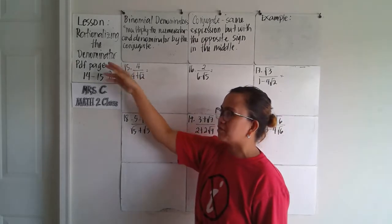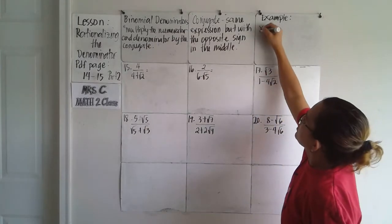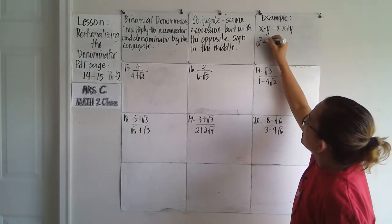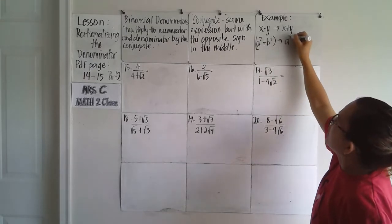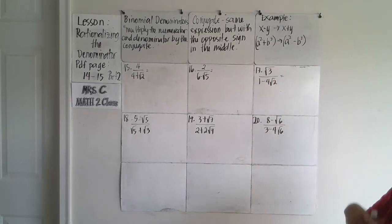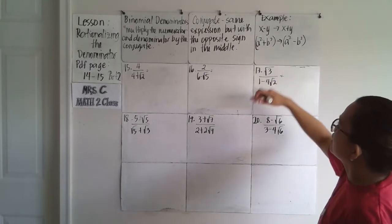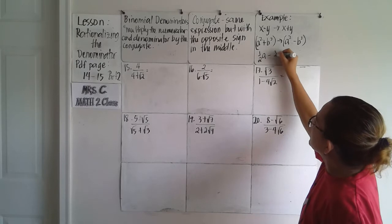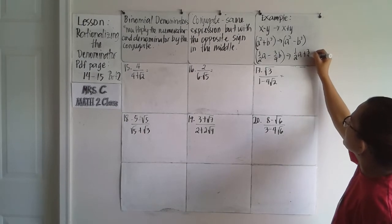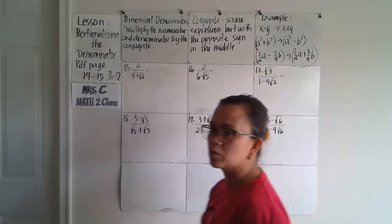You can find all these examples on the PDF file that I'll be attaching on pages 14 and 15. For example, the conjugate of x minus y is x plus y. The conjugate of a squared plus b squared is a squared minus b squared — they are the same expression but with the opposite sign. So if one half a minus three-fourths b, the conjugate is one half a plus three-fourths b: positive becomes negative, negative becomes positive.